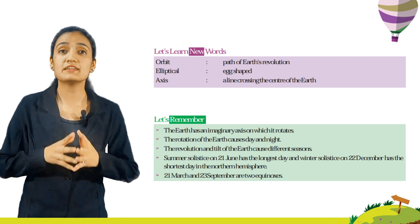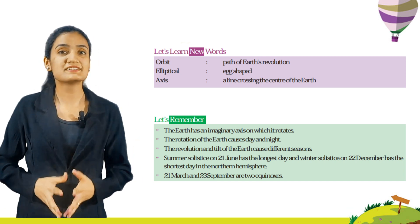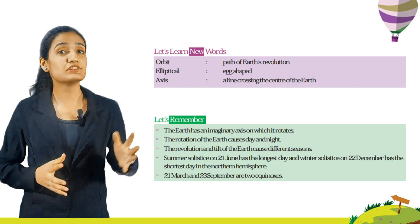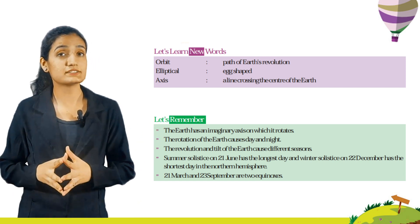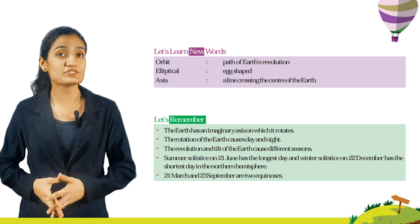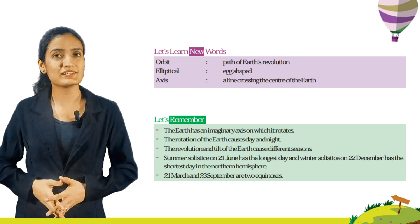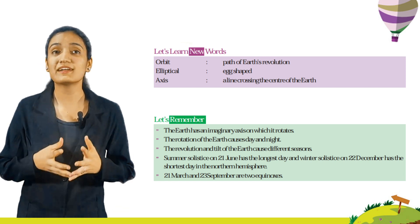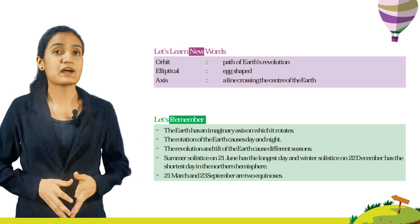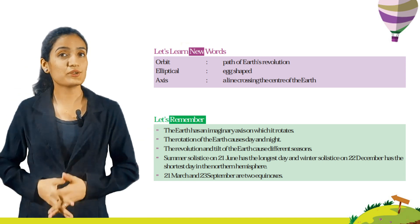Now kids, let's remember. The earth has an imaginary axis on which it rotates. The rotation of the earth causes day and night. The revolution and tilt of the earth cause different seasons. Summer solstice on 21st June has the longest day, and winter solstice on 22nd December has the shortest day in the northern hemisphere. 21st March and 23rd September are the two equinoxes.